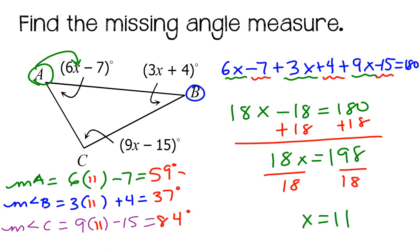Now, let's do a double check. Let's add these three together. 59 plus 37 plus 84. And let's make sure they sum to 180. And they do. Now, I have found the missing angle measures.